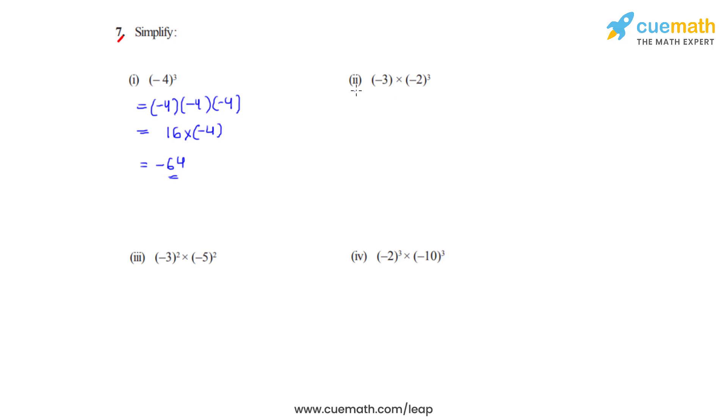Coming to the second bit, we have negative 3 times negative 2 raised to 3. That is negative 2 is multiplied three times.